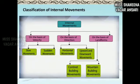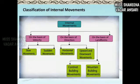Velocity is classified into slow movements, which occur continuously like the formation of mountains and continents, and sudden movements in the form of earthquakes and volcanoes. On the basis of direction: horizontal movements, upward movements, and downward movements. On the basis of landforms: continent-building movements creating continents and plateaus, and mountain-building movements creating folding and faulting.